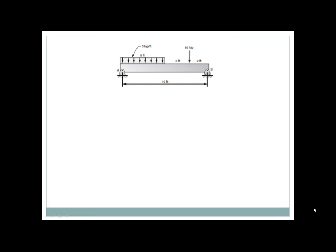This is problem number three, which is a simply supported beam with a uniform load of three kips per foot over the left hand five feet and a concentrated load of ten kips on the right hand side of the beam.